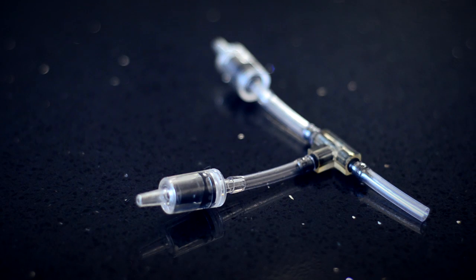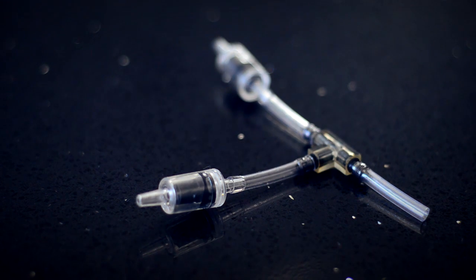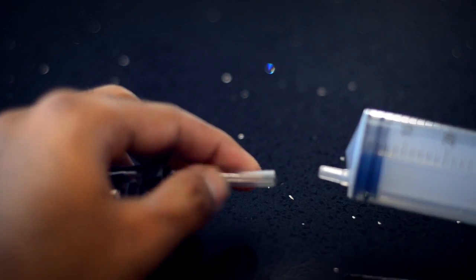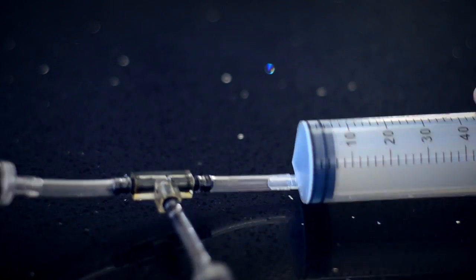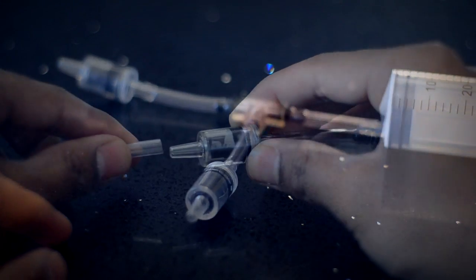Once you've attached both check valves, it should look like this. Attach the syringe to the last end of the 3-way connector and insert the leftover airline into the input side of the check valve that you installed last.